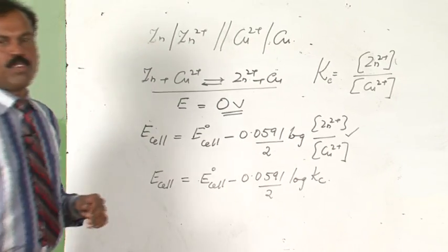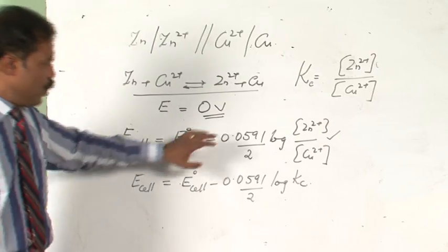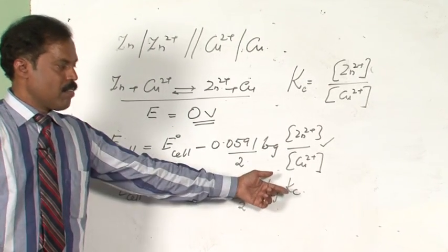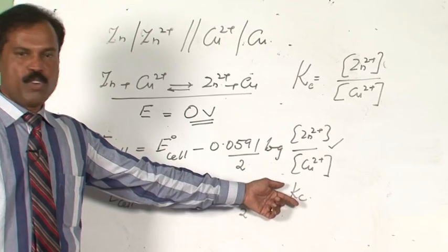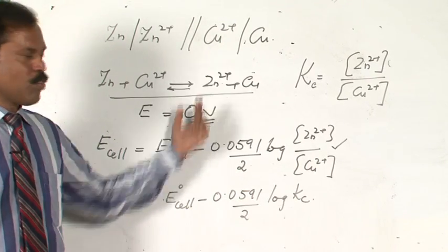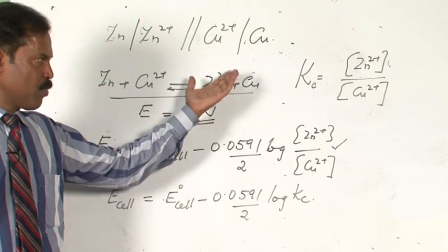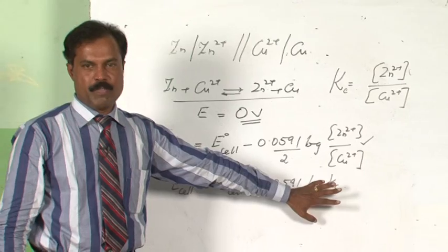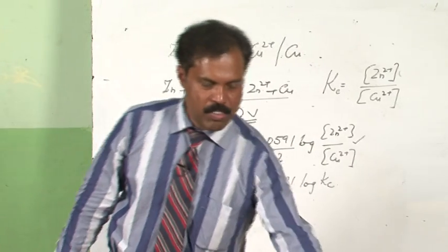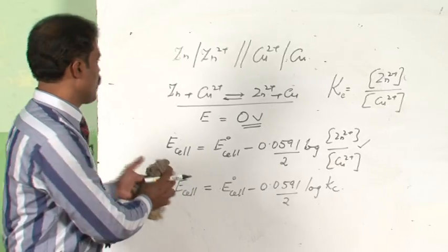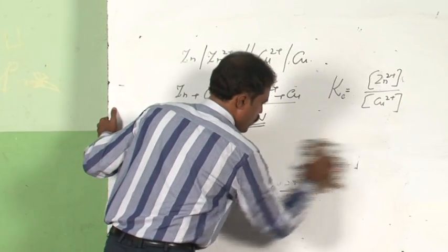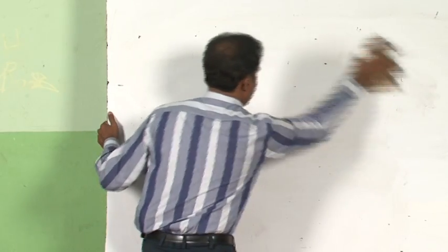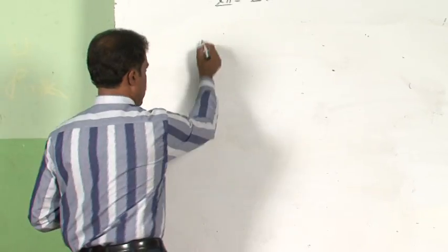The concepts of electrochemistry can be used to find out the equilibrium constant of a reaction. Measuring equilibrium constant is otherwise a little difficult, but using electrochemistry you can easily find it. With this, the discussion of the Nernst equation and the working of electrochemical cells is over. Now we move on to the next important aspect of electrochemistry, which is conductivity.